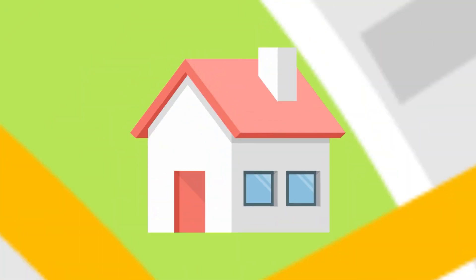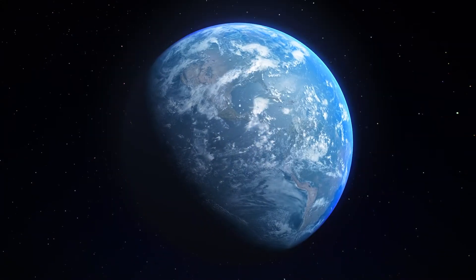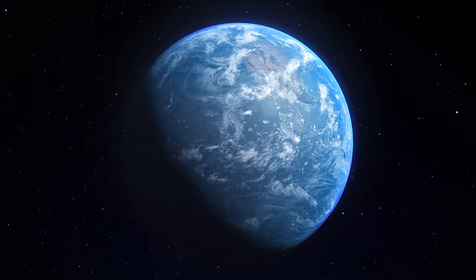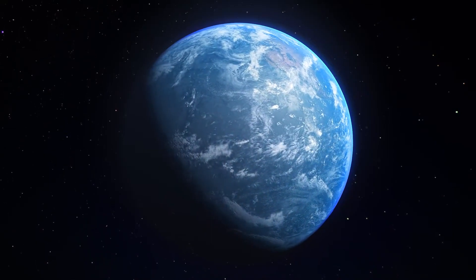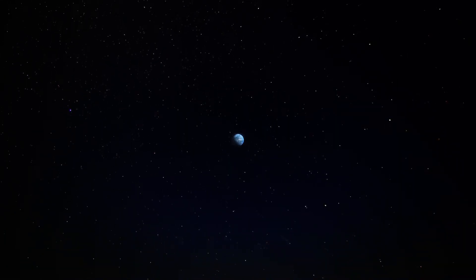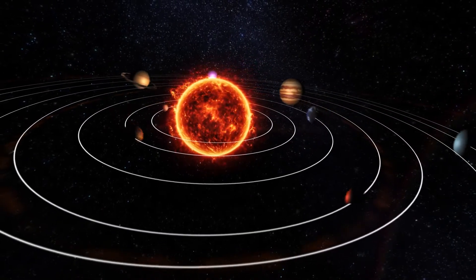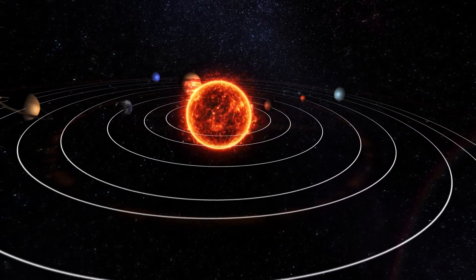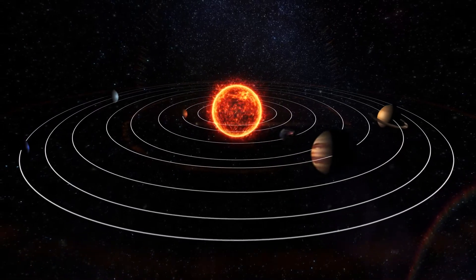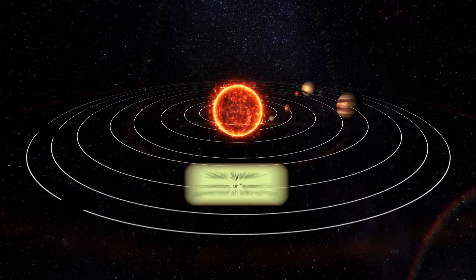Just like how your home is on a street, in a city, in a country, everything in space fits within a larger structure too. The entire Earth may seem huge to us, but cosmically speaking, it's just a tiny speck in space. Earth is a planet that orbits the sun along with seven others. This collection, or system, of planets that all orbit our sun has a special name in astronomy — it's called a solar system.